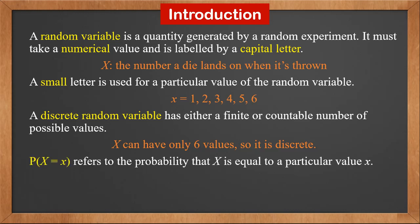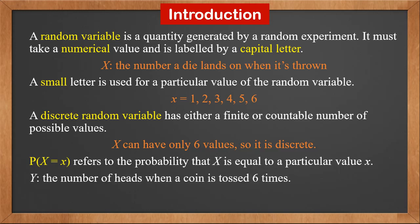P(X = x) refers to the probability that random variable X is equal to a particular value x. Another example of a random variable is capital Y — it is the number of heads when a coin is tossed 6 times.